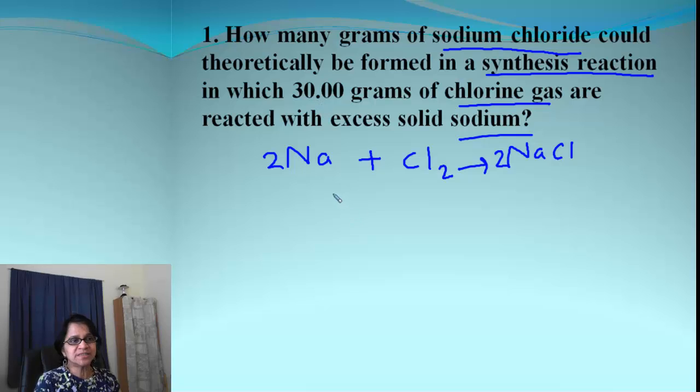And that comes out to be 2Na and 2NaCl. Now, let's write down the given under each of the chemical. So what we know is 30 grams of chlorine gas is something we are beginning with. And then, it is reacting with excess solid sodium. But we have to find out how many grams of sodium chloride could be obtained.